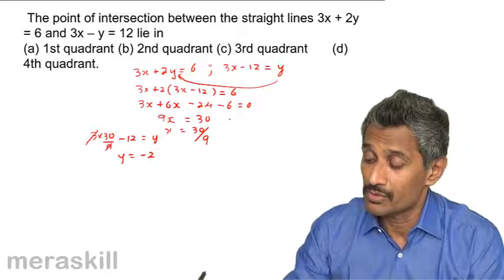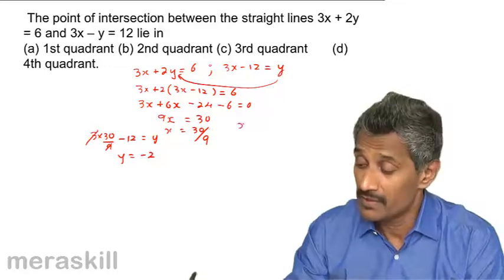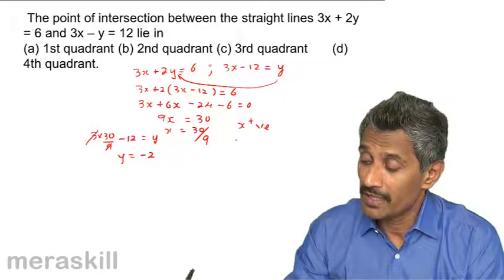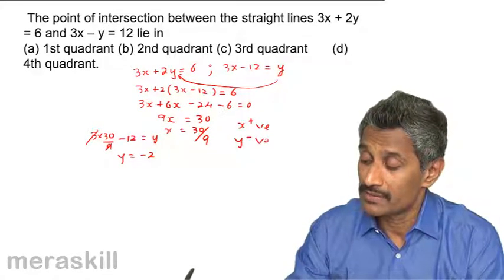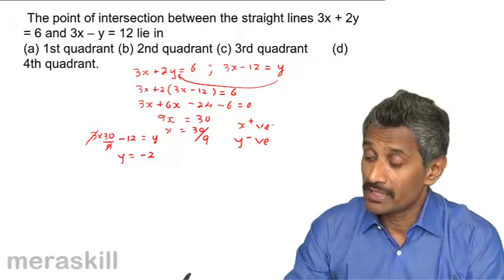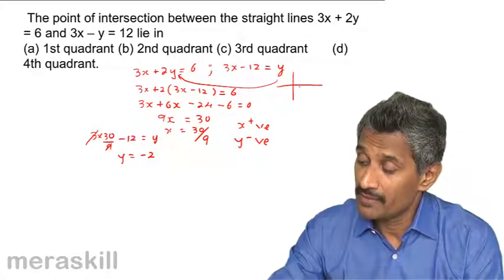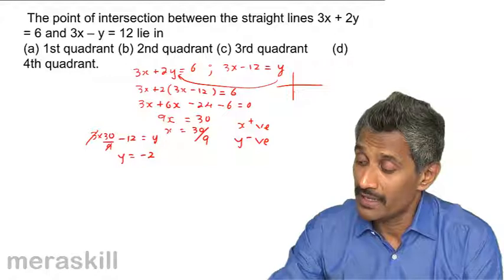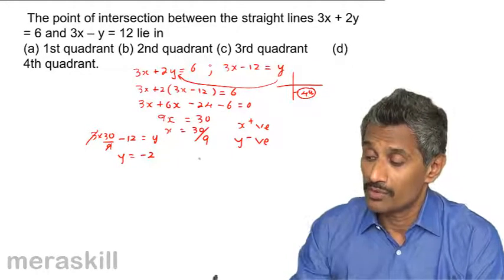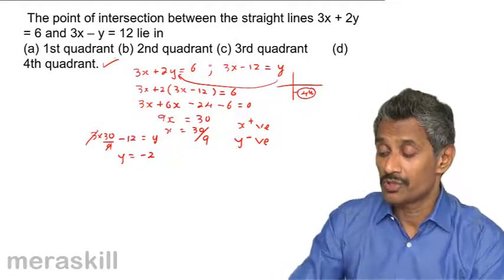So, y turns out to be minus 2. So, x coordinate is positive, x positive and y coordinate negative. If x coordinate positive, you divide. All this has x positive and y negative. So, you put the line of 4. So, among these, this is the option.